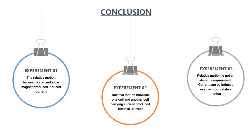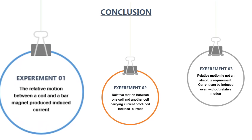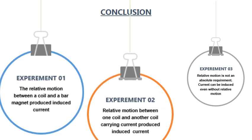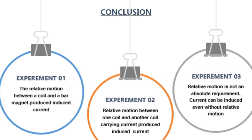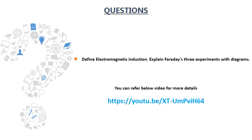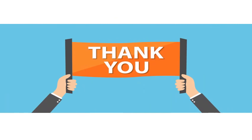Let us conclude these experiments. Experiment 1: The relative motion between a coil and a bar magnet produced induced current. Experiment 2: Relative motion between one coil and another coil carrying current produced induced current. Experiment 3: Relative motion is not an absolute requirement. Current can be induced even without relative motion. Students, this is the assignment question from this topic. You can refer below youtube link for more details about this topic. Have a good day. Thank you.